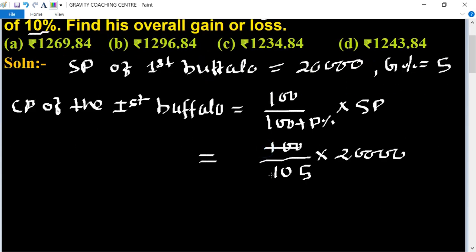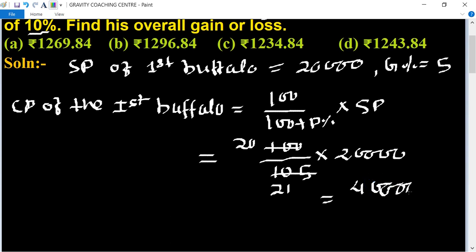Cancelling both numbers by a factor of 5: 20 divided by 21, multiplied by 20,000. So CP of the first buffalo equals 400 divided by 21, which gives approximately 19,047.62.